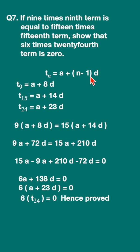Let us find out the 15th term. t15 is equal to, put n equal to 15, you get a plus 14d.